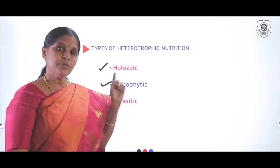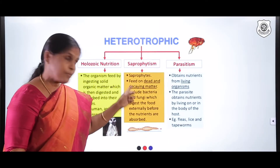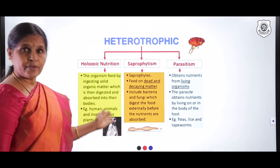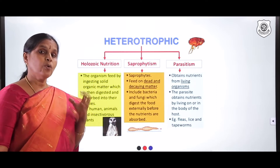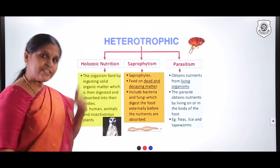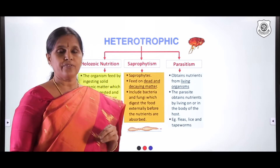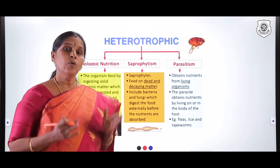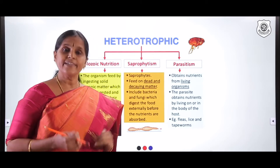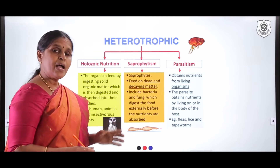Let us have a look at this flow chart. Heterotrophic nutrition is divided into holozoic nutrition, saprophytism, and parasitism, with all definitions given here. Holozoic nutrition: the organisms ingest solid, whole, complex food and digest it within their body. After digestion the nutrients are absorbed and assimilated by the organism, and the undigested food is eliminated — a process called egestion. This type of nutrition is found in humans, many animals, and insectivorous plants.